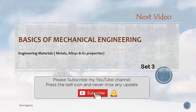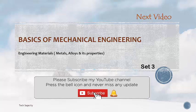Next video: Basics of Mechanical Engineering Set 3. We will discuss engineering materials, metals, alloys and their properties. We will discuss metal joining processes - welding, brazing, soldering. Thank you and please subscribe to my YouTube channel.